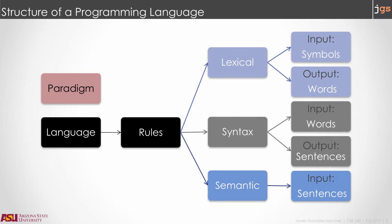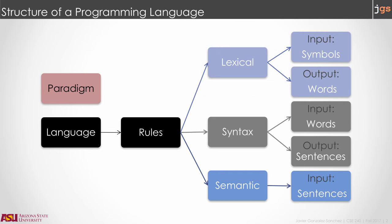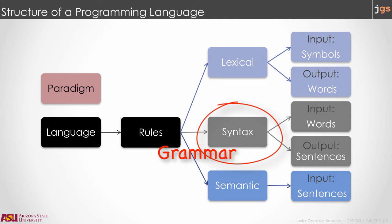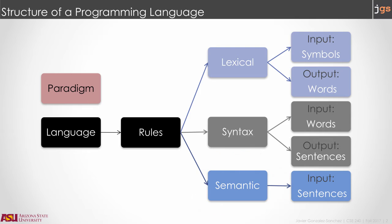The structure of a programming language is defined by its rules. There are three kinds of rules that define a language: lexical rules, syntactical rules (also called the grammar), and semantical rules. Let's review each of them.